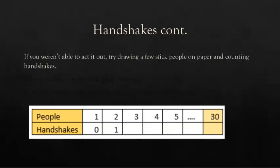If you weren't able to act it out, let's try drawing a few stick people on paper and counting the handshakes. So here's one person. They can't shake hands with anybody, so that's zero. Here's two people. They're going to shake hands together, and that would be one. Here's a third person. We already have the one handshake. Now the first person can shake hands with the third person, and the second person can shake hands with a third person. So it appears that we have three handshakes when we have three people.